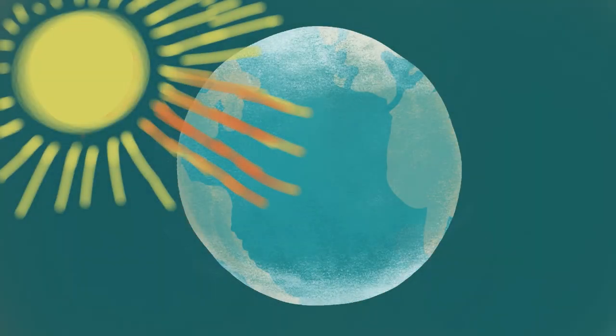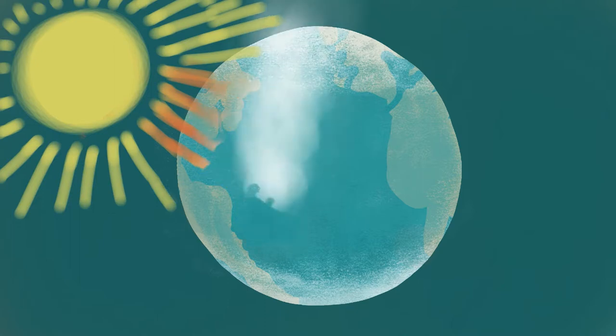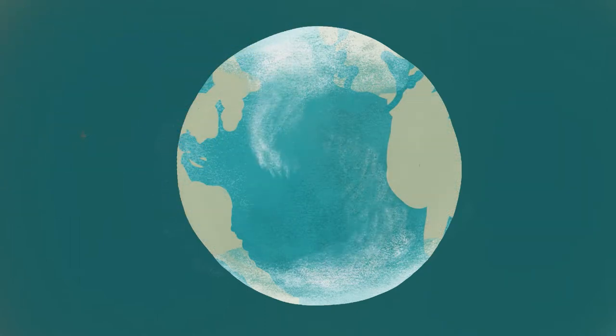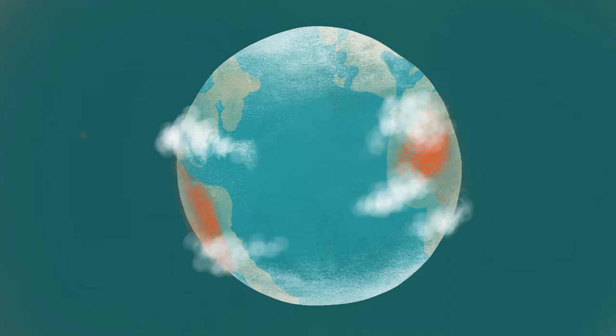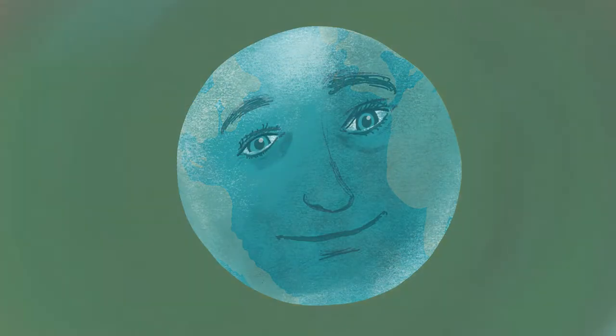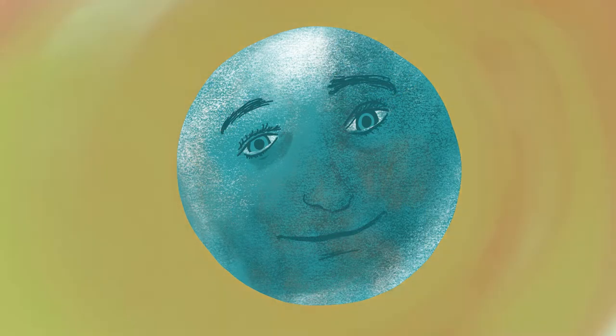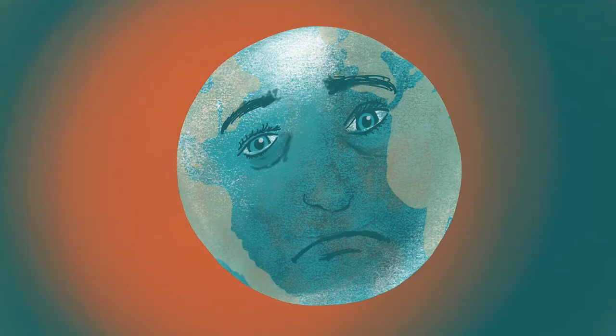The ocean's water currents distribute the absorbed heat around the globe, evening out the otherwise extreme temperatures of the poles and the equator, and making most of the Earth habitable. But this heat capacity also makes the ocean very vulnerable to climate change.